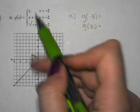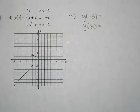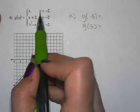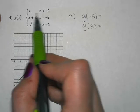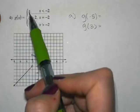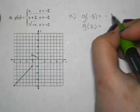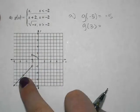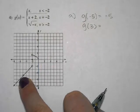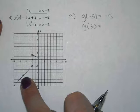Which of the three pieces are we allowed to plug in negative 5? Negative 5 is an x value — it's less than negative 2, so the only place I can plug it in is into the first function. If I plug in negative 5, I get negative 5. This one shows up on our graph, so I get a y value of negative 5. I was able to do it algebraically, but I could also look at my answer graphically and see it that way.